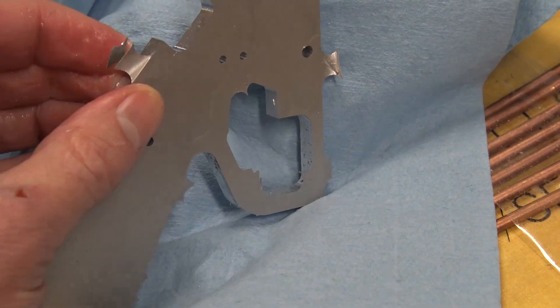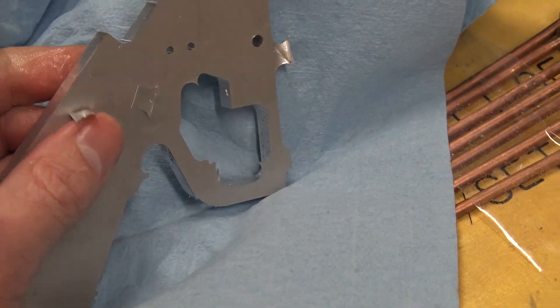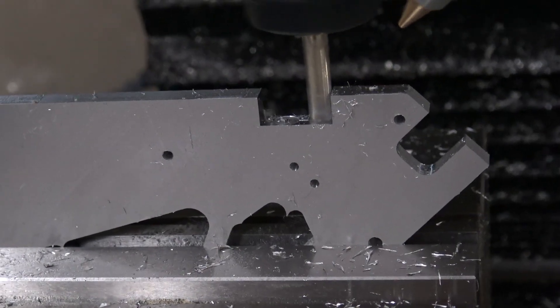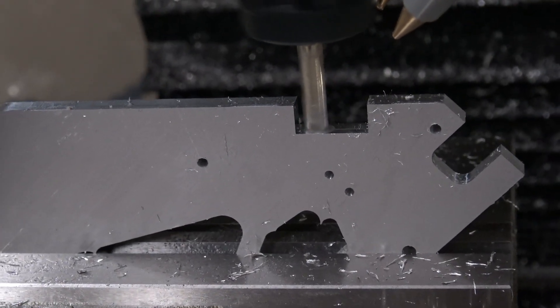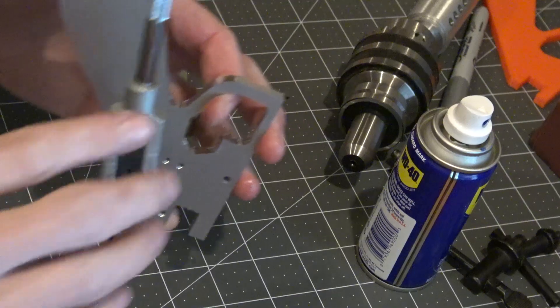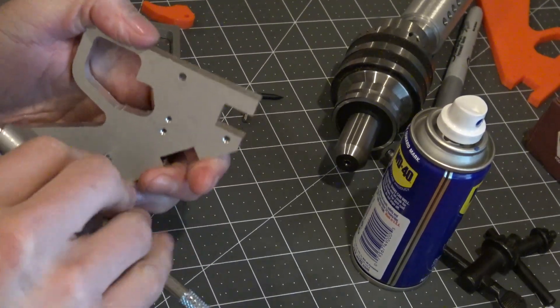You can see how easily these tabs just break off. They're just a couple thousandths thick. Just break right off and de-burr a little bit. Then here, just had to clean up some of the corners that the radius of the end mill couldn't quite reach. Kind of did those by hand with the jog wheel. Then I just threaded all the holes by hand.